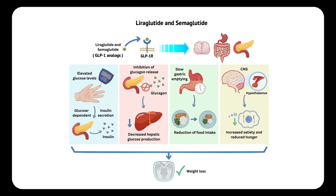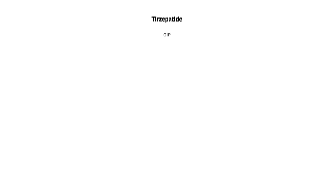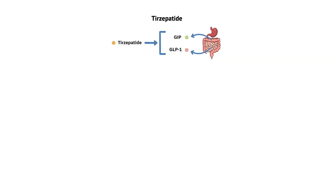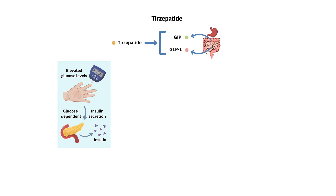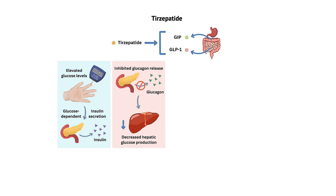Tirzepatide is our final weight loss agent to discuss. Tirzepatide is a novel drug belonging to the class of dual glucose-dependent insulinotropic polypeptide (GIP) and glucagon-like peptide-1 (GLP-1) receptor agonists. This drug is unique because it targets two incretin hormones, GIP and GLP-1, which play a crucial role in glucose homeostasis and appetite regulation. The mechanism of action can be divided into four primary effects. Number one, enhanced insulin secretion: similar to GLP-1 receptor agonists, tirzepatide stimulates glucose-dependent insulin secretion from pancreatic beta cells, meaning insulin is only released when blood glucose levels are elevated, minimizing the risk of hypoglycemia. Number two, suppressed glucagon secretion: tirzepatide suppresses glucagon secretion from pancreatic alpha cells in a glucose-dependent manner, leading to decreased hepatic glucose production and contributing to lower blood glucose levels.